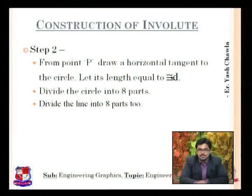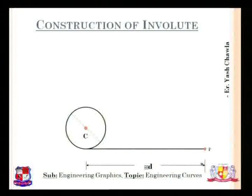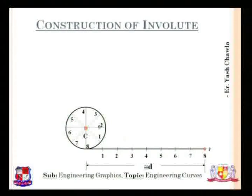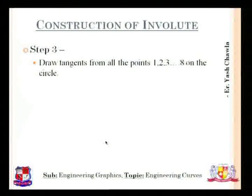This is pi, pi D. We are going to divide the circle and the line both into eight parts. The circle is being divided into eight parts and then the line will be divided into eight parts as well. So this is how the lines are divided into eight parts and the circle is divided into eight parts. The next point: let's draw tangents to all the points on the circle that we have received.